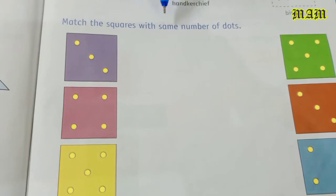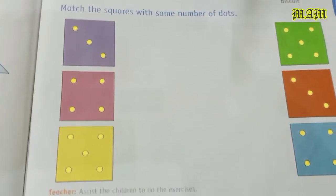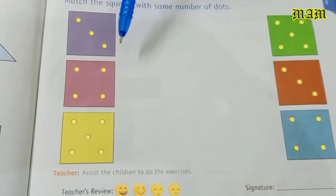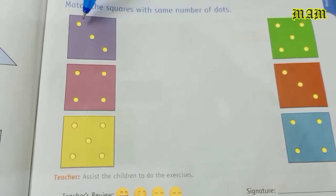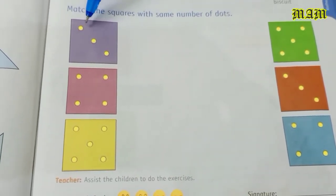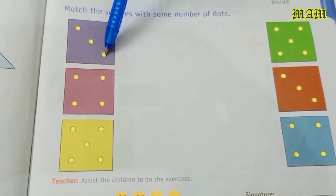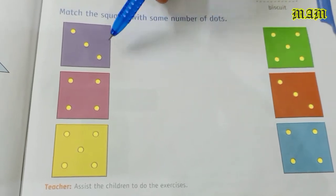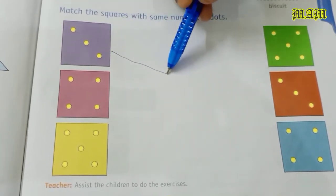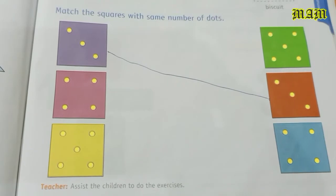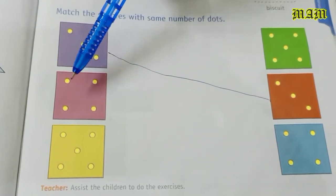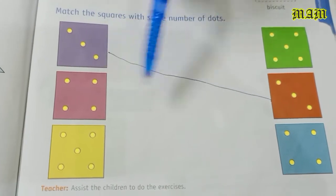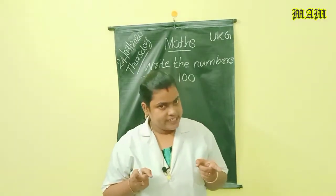Next, match the squares with same number of dots. This side square, same number of dots, one, two, three dots. Match them. All of you got it?